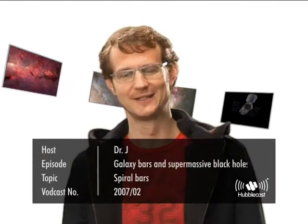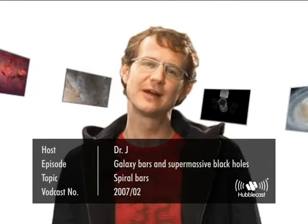Welcome to the Hubblecast. When we look around us in the universe with powerful telescopes, essentially all the light we see comes from billions and billions of stars, and these stars are gathered together in galaxies. So galaxies are essentially just huge collections of stars, gas and dust, and they come in an enormous variety of different shapes and sizes.